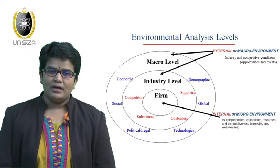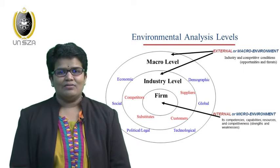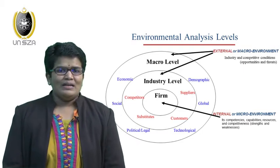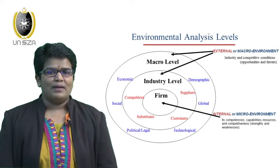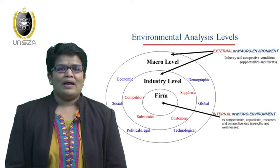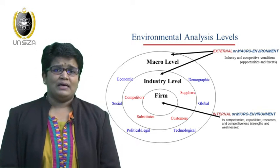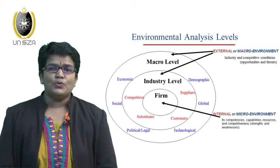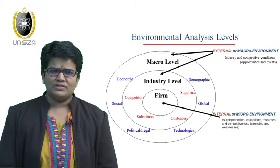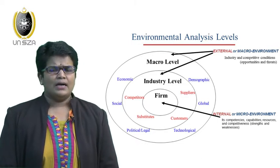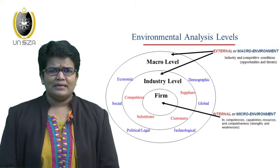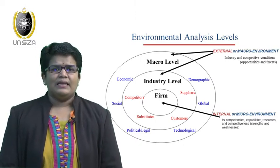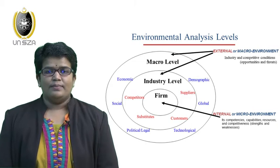That is what we call the macro level. When we talk about the industry level, we look at who our competitors will be, what substitutes are available in the market, who our customers will be, and who our suppliers will be. We observe, survey, or use secondary methods to collect data and analyze ongoing trends in the business environment.